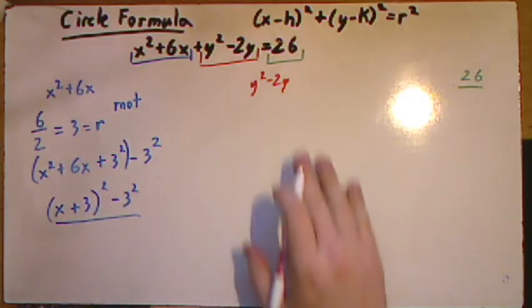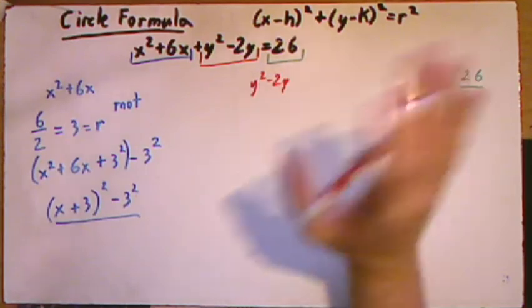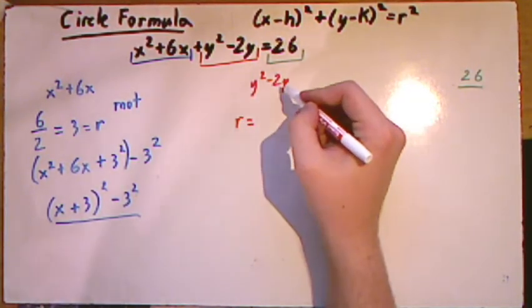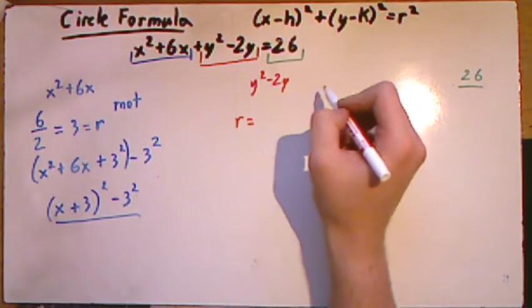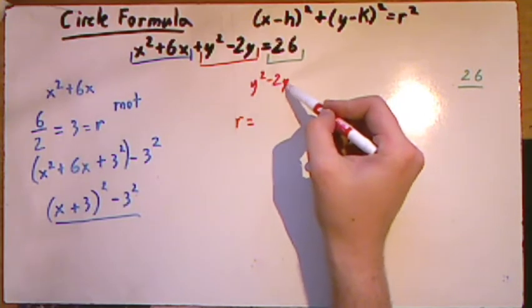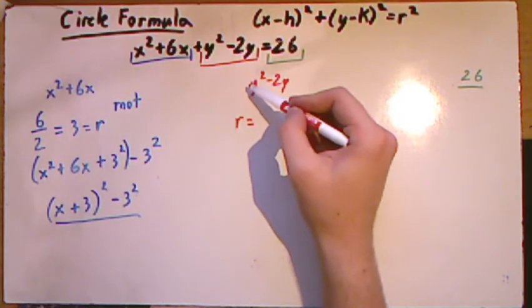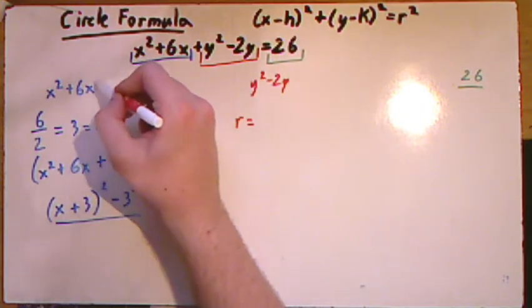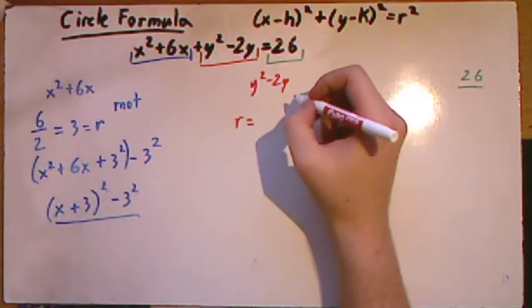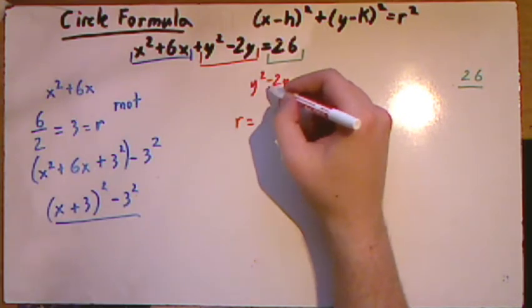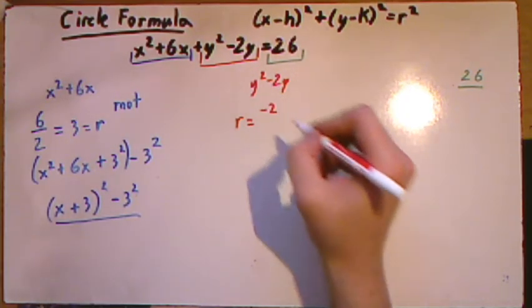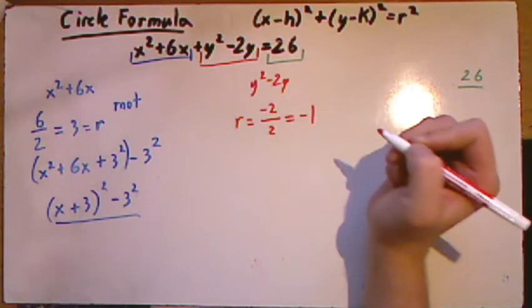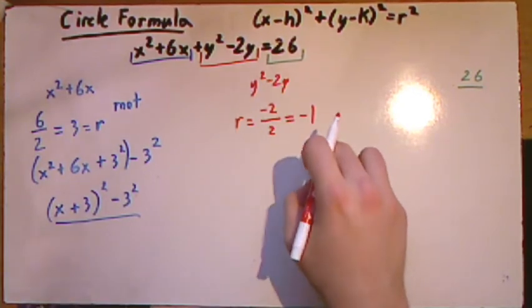Then we want to look at the y values. We're going to do the exact same thing. We want to find our root term. So, we take the number next to our single variable. Now, it is important to remember that it's a single variable. Here, we have y squared. We don't want to look at the y squared. We want to look at just the y. Here, we want to look at just the x, not the x squared. So, in front of the y, we have a negative 2. We take the negative 2, we divide it by 2, and we get negative 1. That is our new root value.